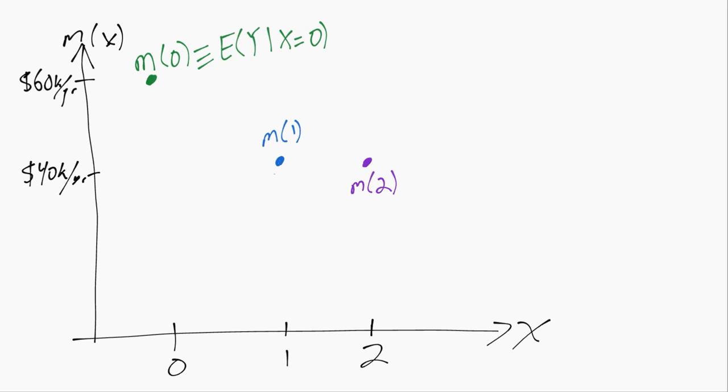Returning to this example again, we can see how the distribution of X can have a big influence on the best linear approximation of the CMF. In this case, we have three possible values of X and three points on the CMF.